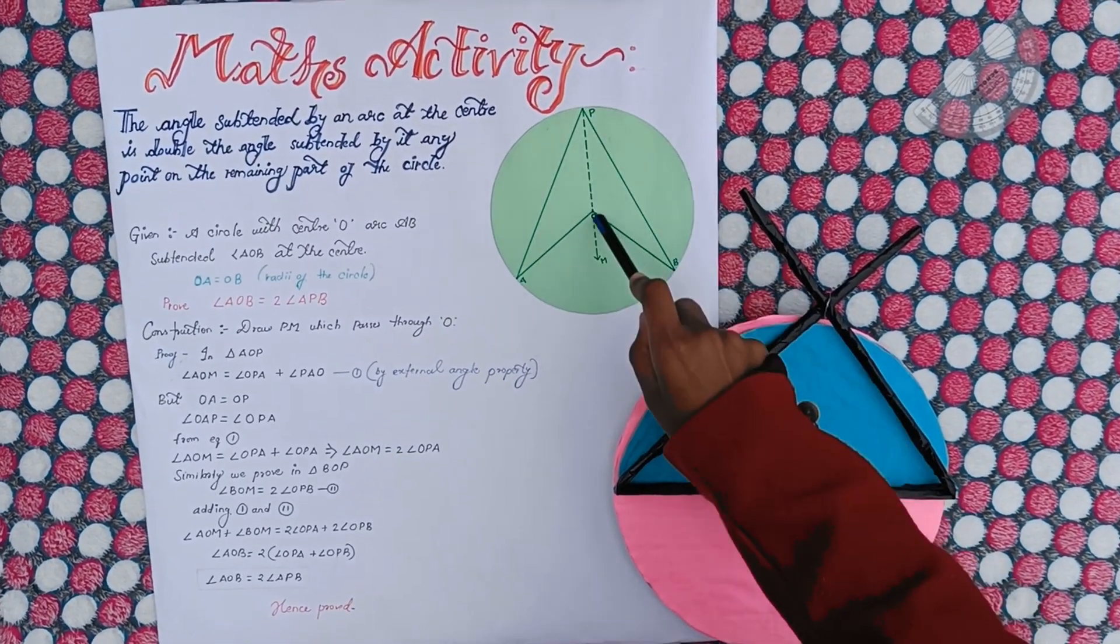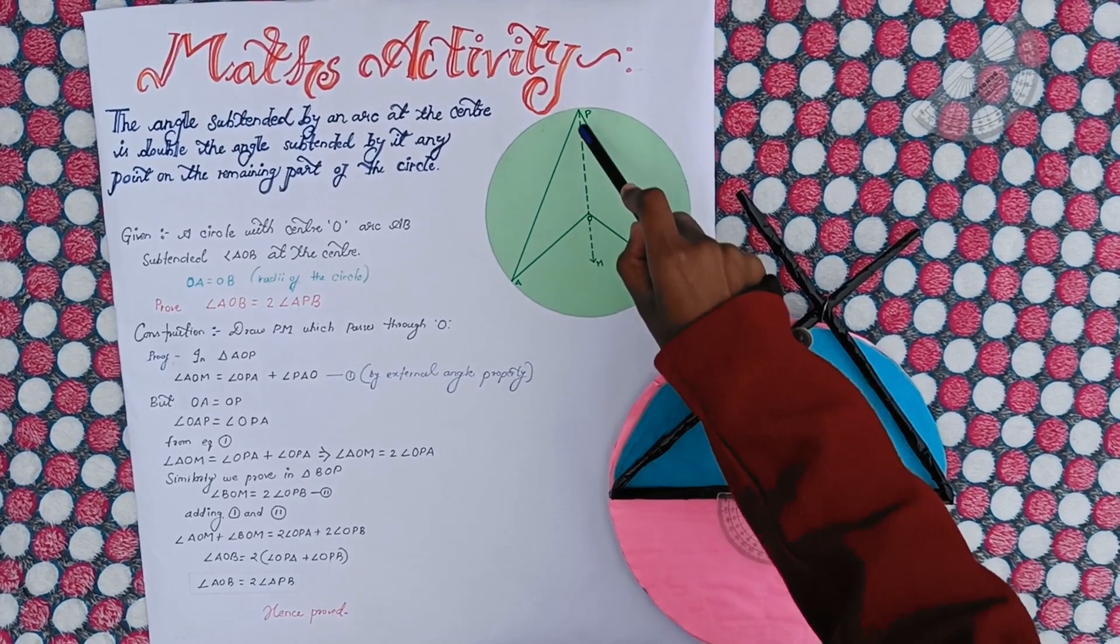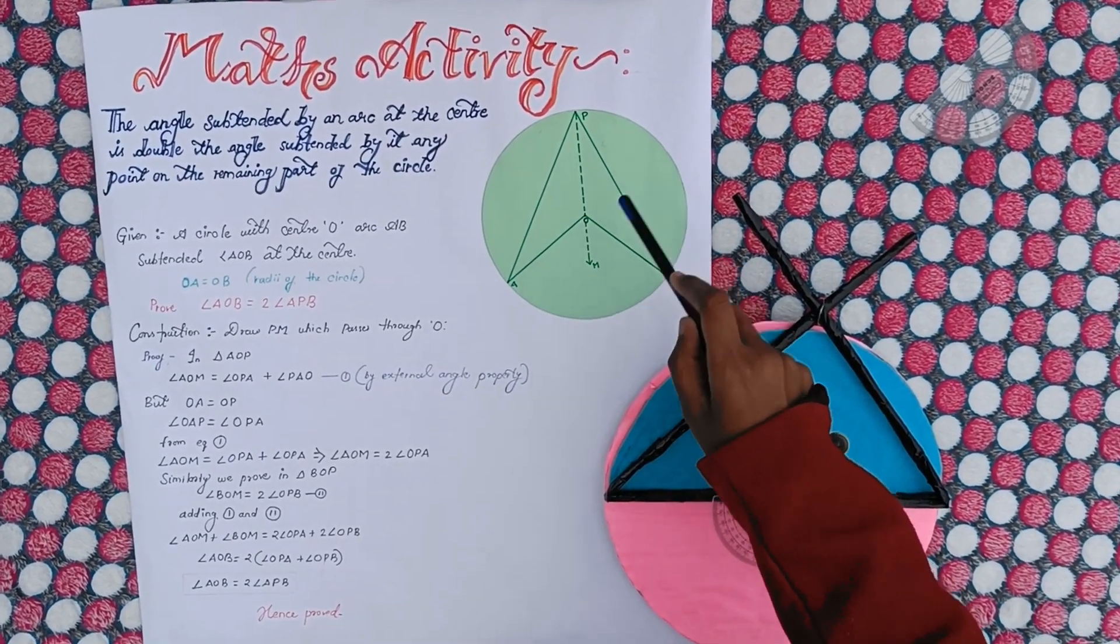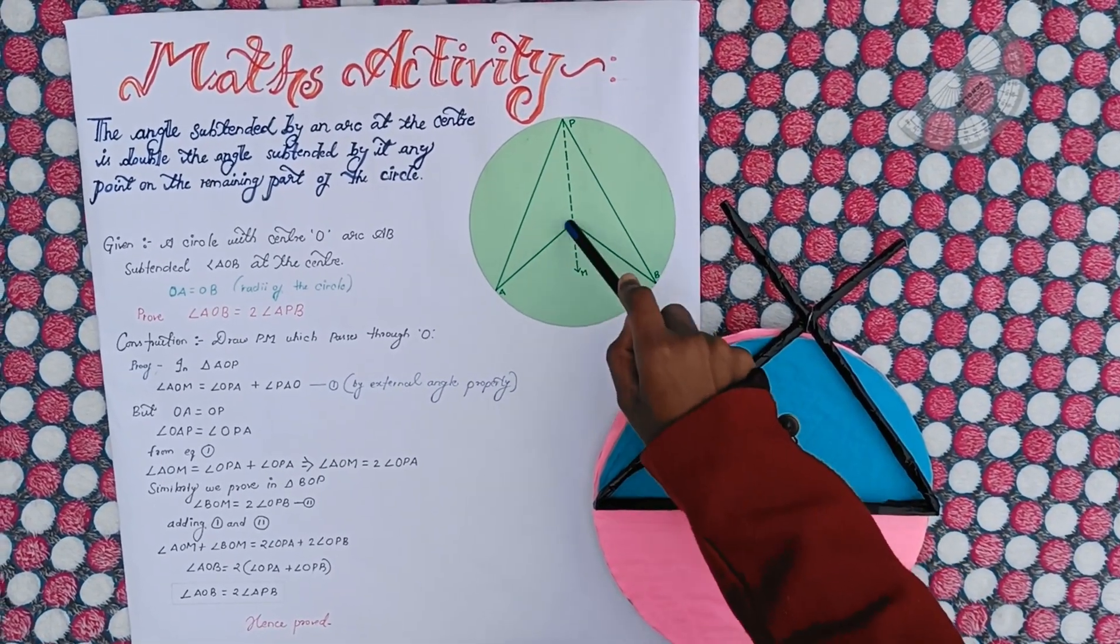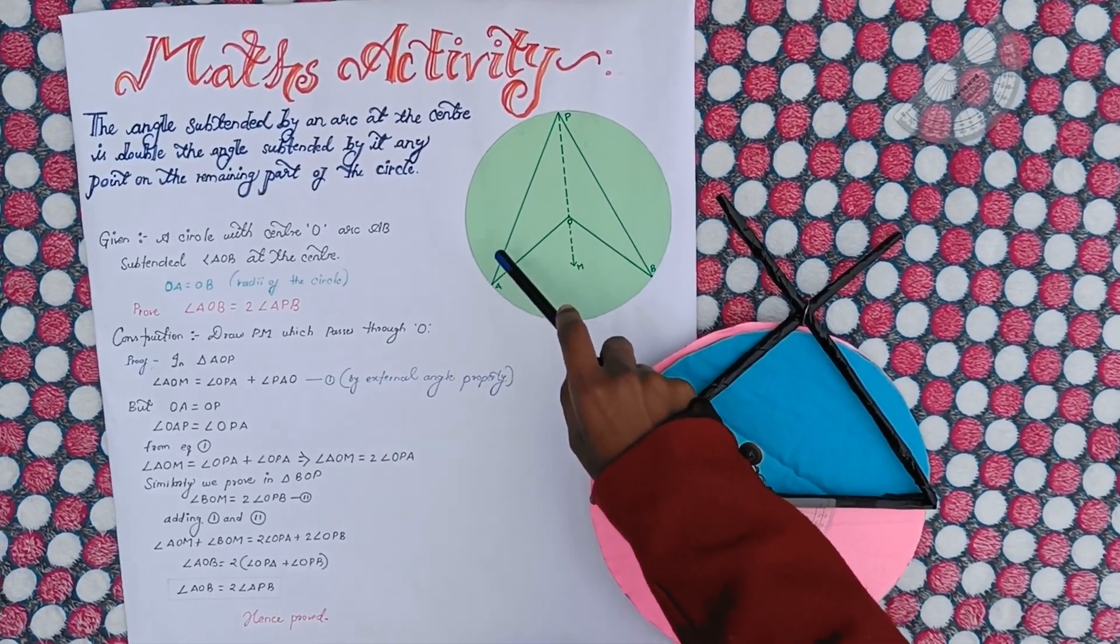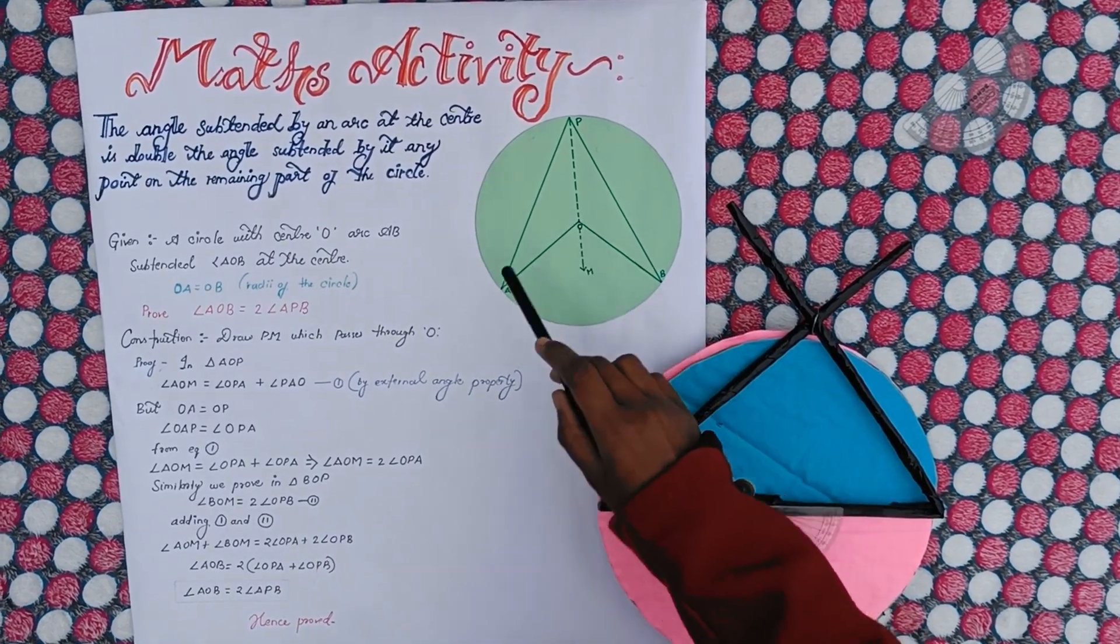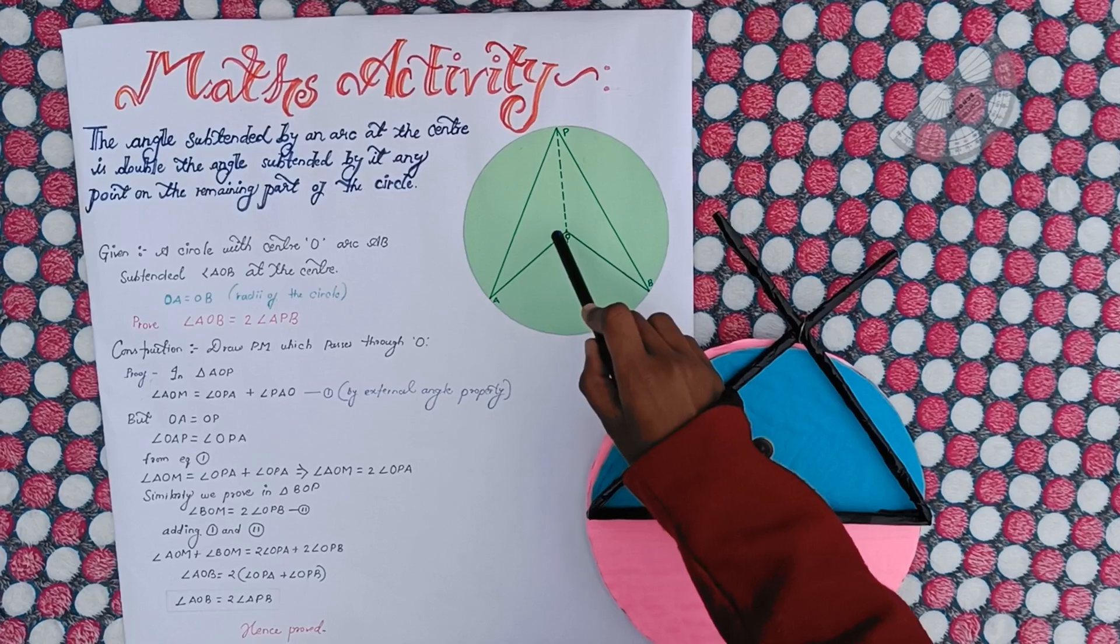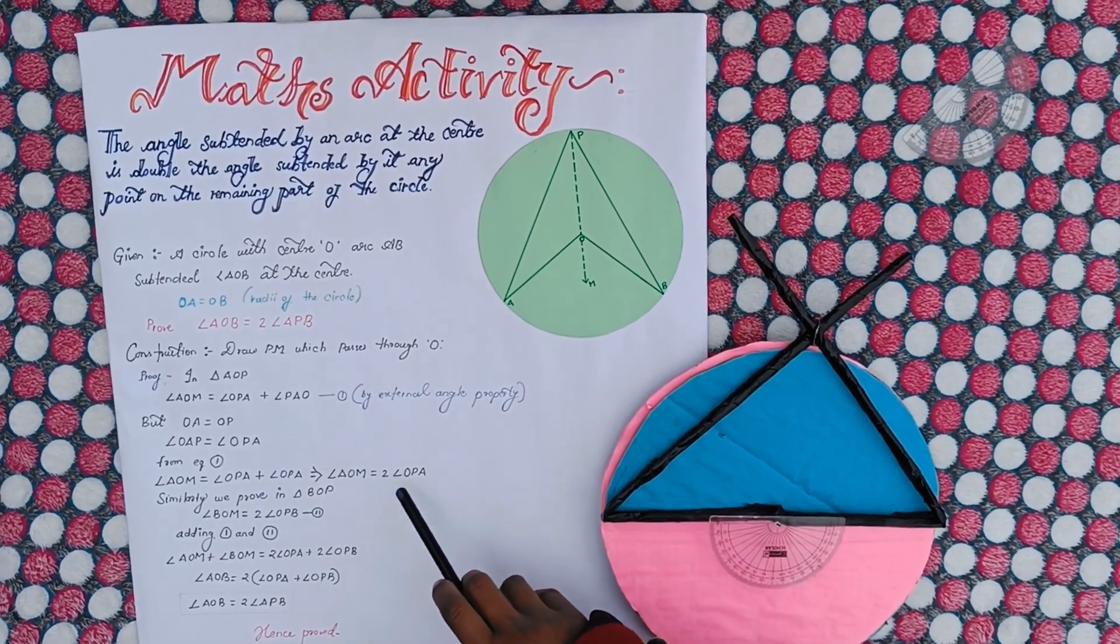In triangle A-O-P, angle A-O-M is equal to angle A-P-O plus angle P-A-O by external angle property. But O-A is equal to O-P, so angle O-A-P is equal to angle O-P-A. We consider from equation 1, angle A-O-M is equal to angle O-P-A plus angle O-P-A, which implies that angle A-O-M is twice of angle O-P-A.